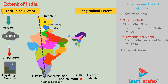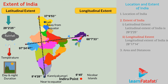Longitudinal extent. The longitudinal extent of the country is between 68 degrees 7 minutes 33 seconds east to 97 degrees 24 minutes 47 seconds east. Thus, the longitudinal extent of India is 29 degrees 17 minutes 14 seconds.